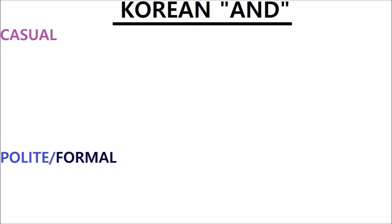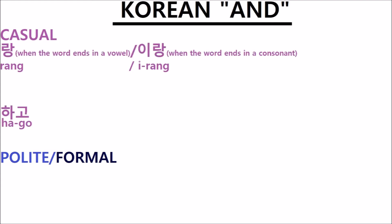Like many words in Korean, 'and' has a casual version and a polite/formal version. Actually, there are two casual versions: 하고 (hago), and 이랑/랑 — 랑 if the previous word ends in a vowel, and 이랑 if the previous word ends in a consonant. The 랑/이랑 version is the extra-casual version. You use both of these versions as suffixes.